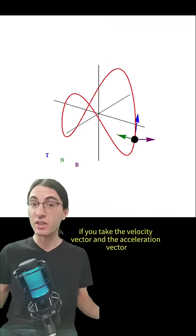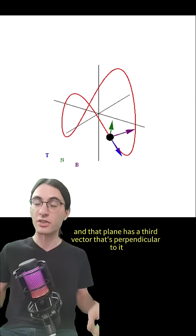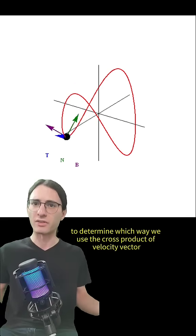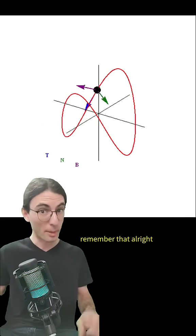So we're almost done. If you take the velocity vector and the acceleration vector, they form a 2D plane, and that plane has a third vector that's perpendicular to it. To determine which way, we use the cross product of the velocity vector and the acceleration vector. This third vector is called the binormal. Remember that.